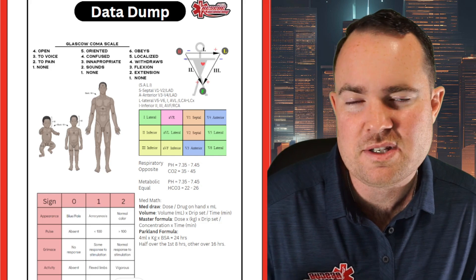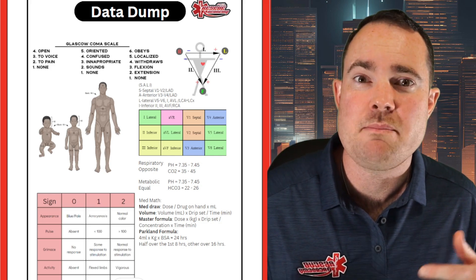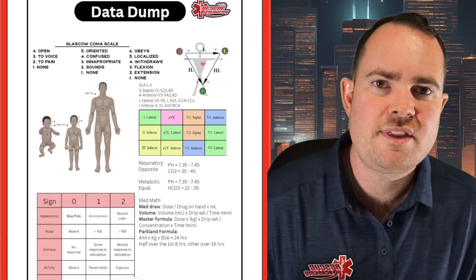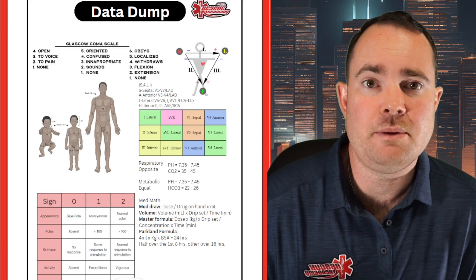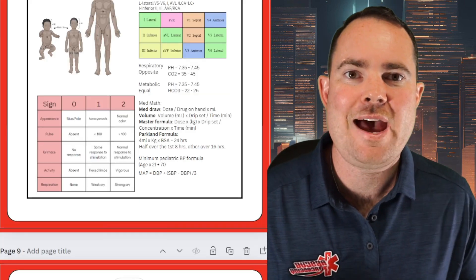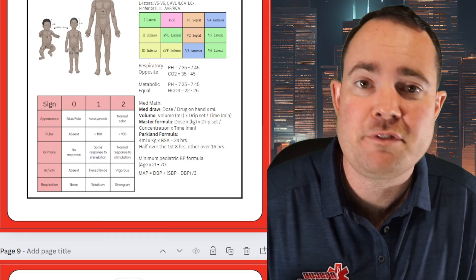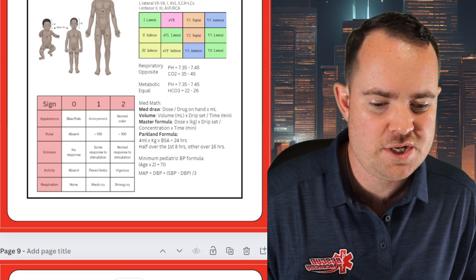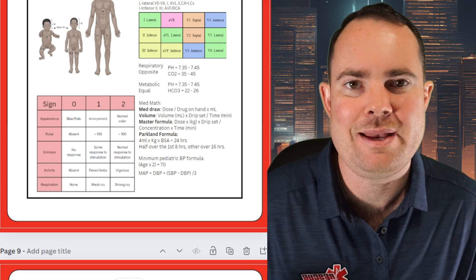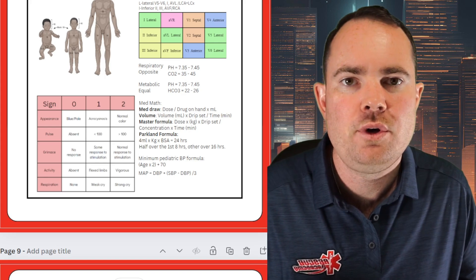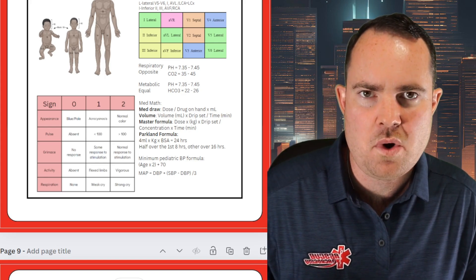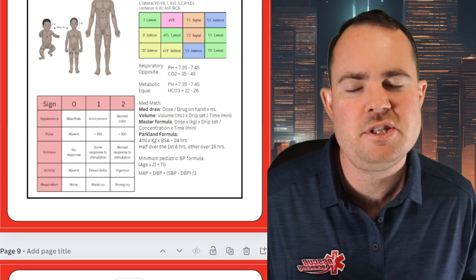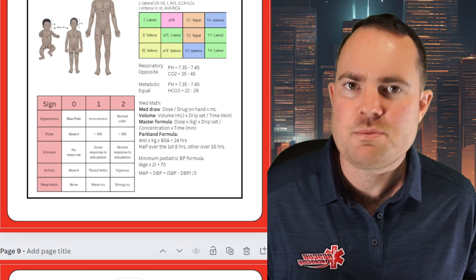I would highly recommend that you practice these types of questions — definitely do med math practice before you sit for the national, but write down your formulas and practice them day-to-day. I also added the pediatric blood pressure formula: age times two plus 70, and how to calculate MAP or mean arterial pressure. All of these require a little bit of practice, so if you've never done any of these math formulas, please write them down and do some practice questions.